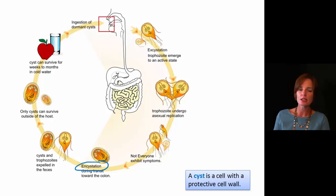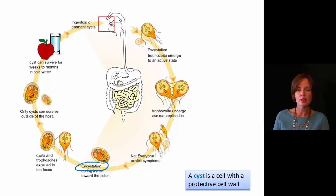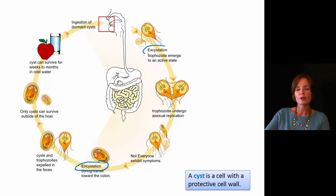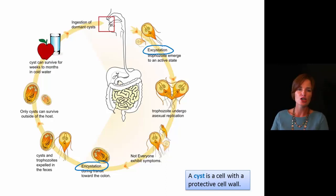That cyst is going to be resistant to a variety of different things in the environment. These cysts can survive outside of a host for a long period of time — sometimes weeks, months, could even be years, depending on the protist. Later on, that cyst is going to go through excystment, where it exits that stage and becomes really active again. The cyst part is a dormant stage, and excystment allows it to become active.